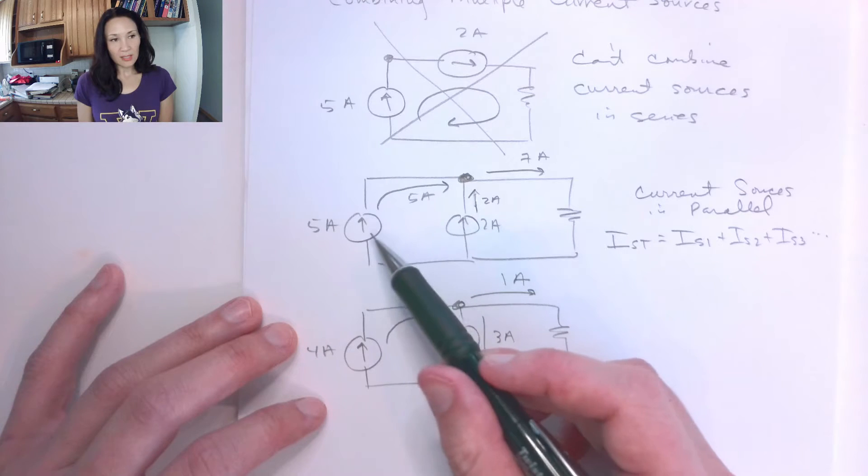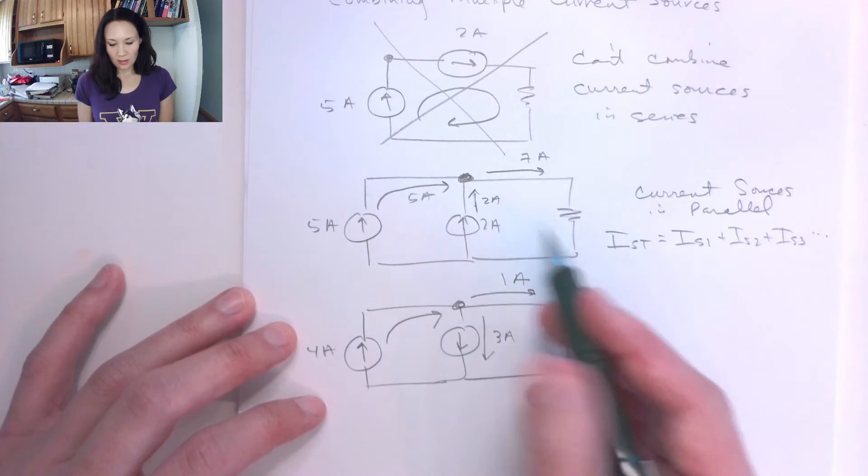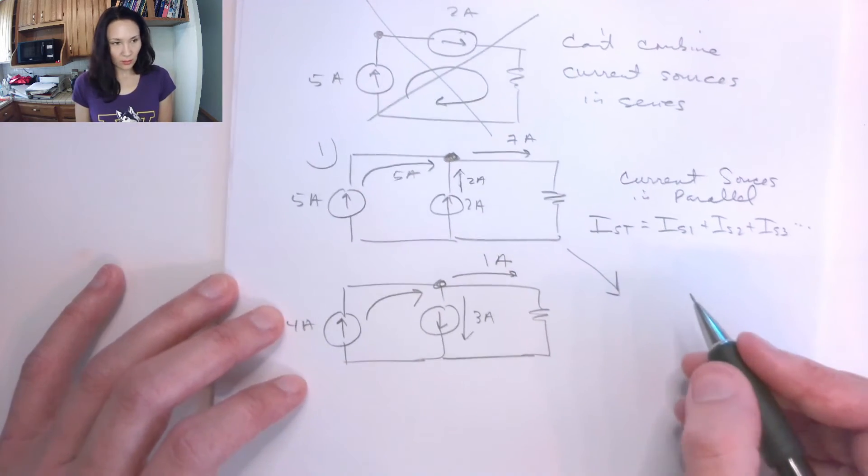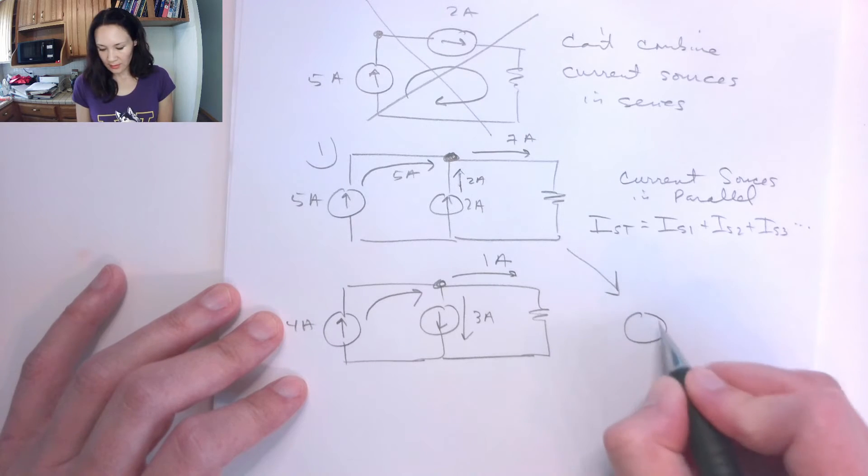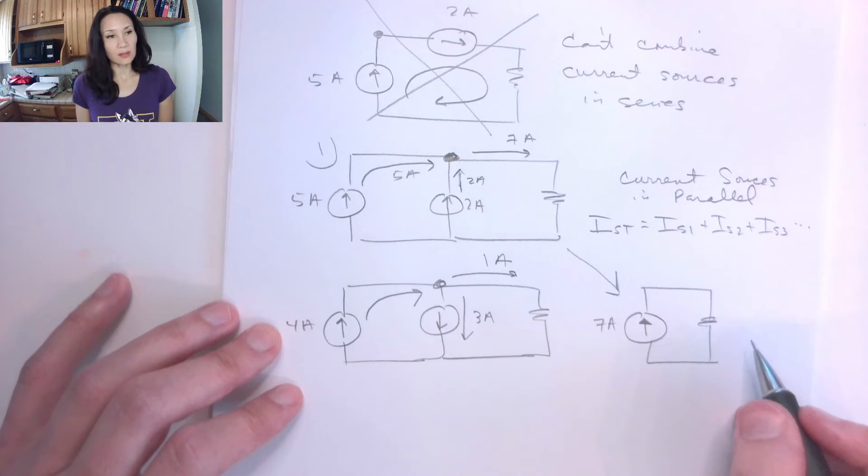So for example 1, this circuit can change to just a single current source in the upwards orientation with a value of 7 amps that's connected directly to our load resistor.